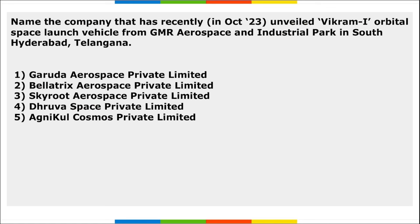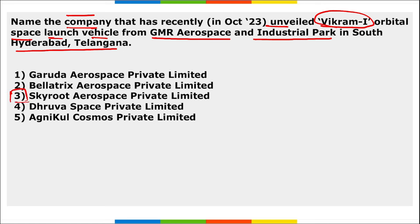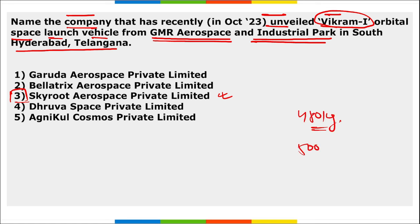Next: name the company that recently unveiled the Vikram-1 orbital space launch vehicle from GMR Aerospace and Industrial Park in South Hyderabad, Telangana. It is Skyroot Aerospace Private Limited. The Vikram-1 rocket is capable of carrying a load of up to 480 kilograms into a 500-kilometer low-Earth orbit.